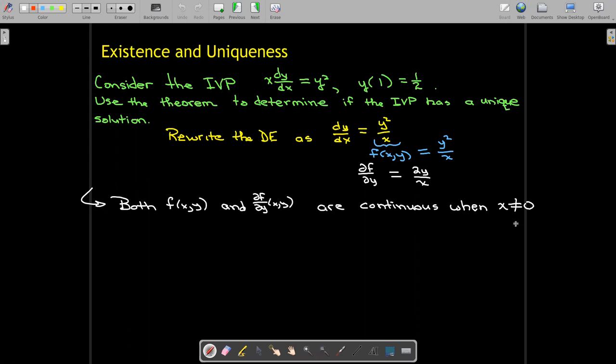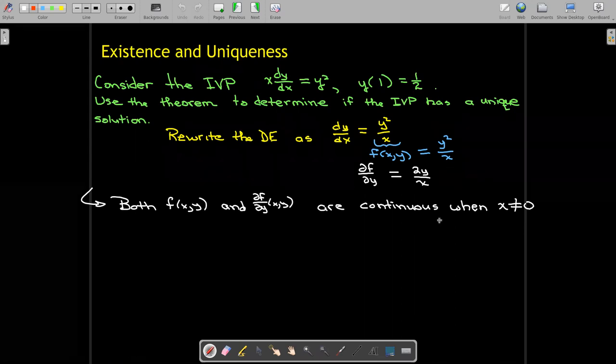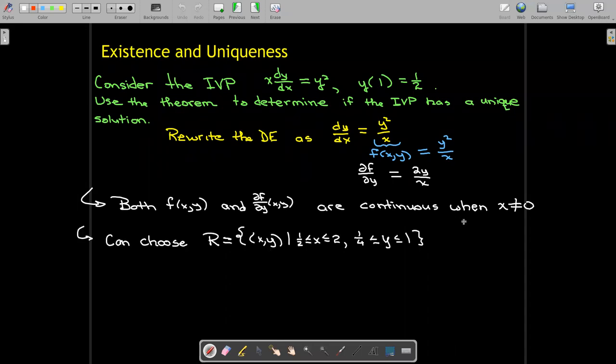So all I need to do is see, can I find a rectangle containing my point where x is not equal to zero? And sure, there's lots of choices. I chose this rectangle: I said x should be bounded between 1/2 and 2, so it has to contain 1. Y will be bounded between 1/4 and 1—it has to contain...